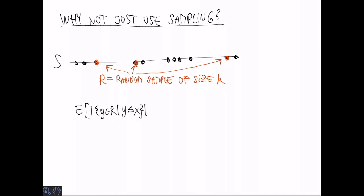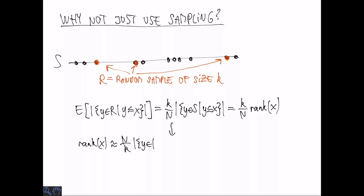So in particular, if we look at the random sample R, the expected number of things that are less than or equal to X is going to be some number times the rank of X. And this number is K over N, where K is the size of the sample and N is the number of elements in the set. Inverting this, we could approximate rank as N over K times the rank in the sample.